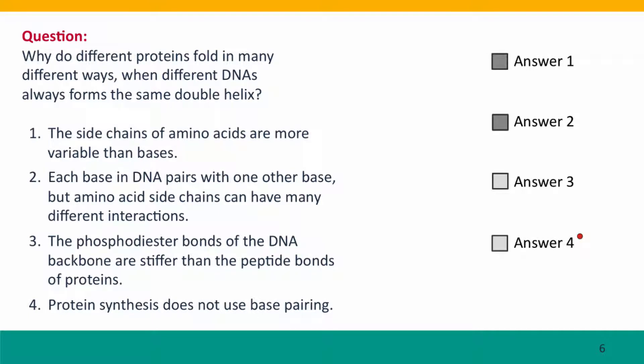And there's two right answers. First, the side chains of amino acids are much more variable than bases. Not only are there 20 different side chains, but the side chains of amino acids show much more dramatic differences in structure. Even though they're smaller than the bases, the bases really only come in two types, whereas side chains of amino acids come in many different types with many different chemical properties.